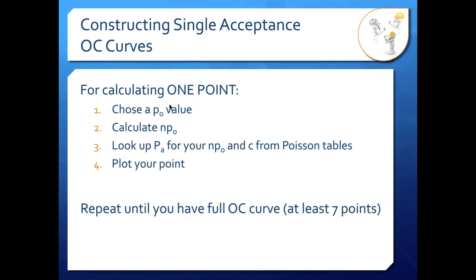The second thing I need to do is calculate my NP0 value, which is just my sample size n times whatever P0 value I chose in step one. Now that I have my NP0 value, I can look up my probability of acceptance PA from my NP0 and c from the Poisson tables. And then I have PA. I go back to P0 and I can use that PA and P0 pair to plot my point on my OC curve. And then I need to repeat that until I have my full OC curve shape. And that's at least 7 points, more if you want to be more confident about what that shape looks like.